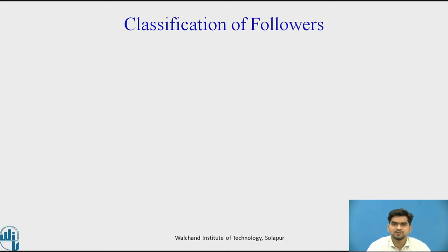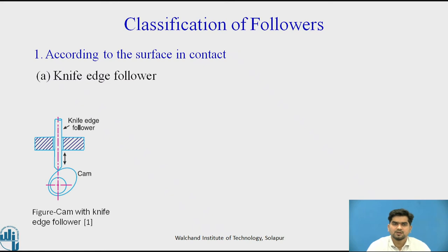Now we will see the classifications of Cam and Follower. First, we will observe the classification of the Follower according to the surface in contact — that is, the nature in which the follower surface contacts the Cam surface. The first type is the knife edge follower, where the follower contacts the Cam by its knife edge. However, knife edge followers are used rarely because the excessive wear rate is a major problem.